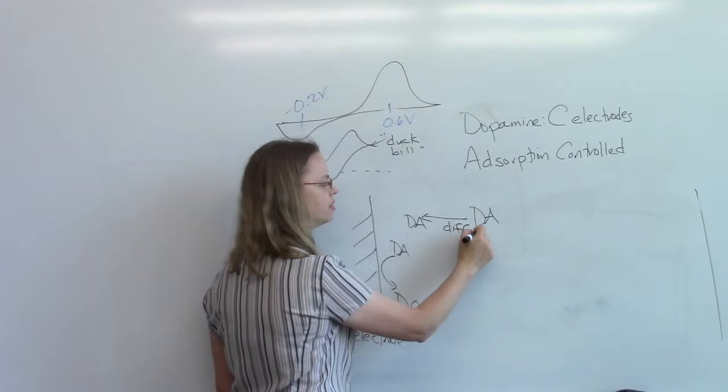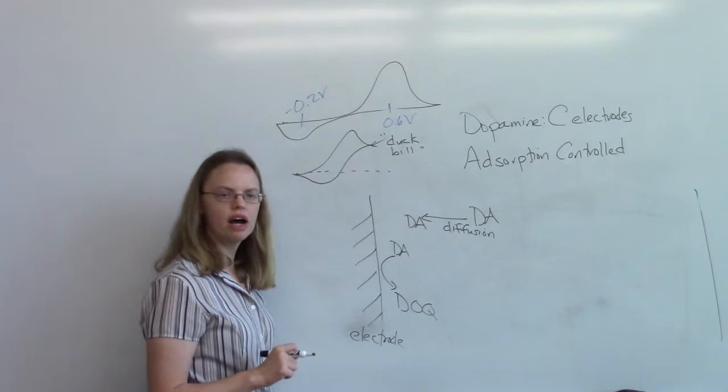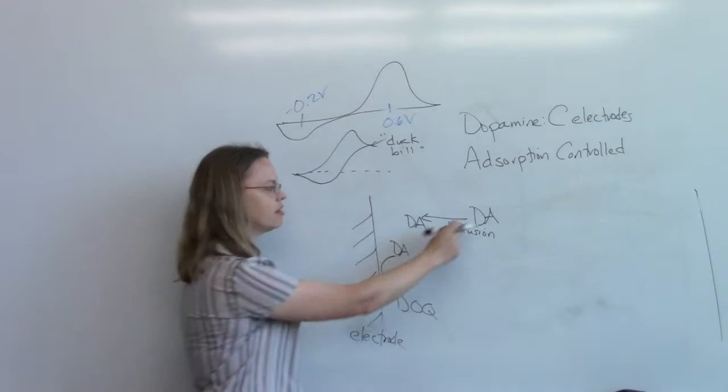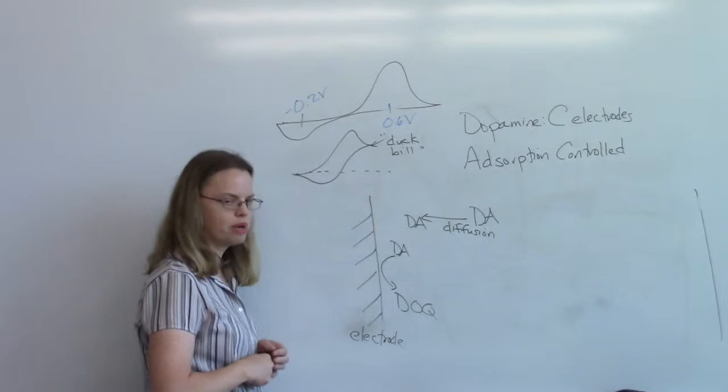It needs to get to the electrode surface to do that, and that we call diffusion. I'm going to pretend we're not stirring here so there's no convection. So we've got to get it to the surface. Even if there is convection, there's still diffusion at the end. So we've got dopamine diffusing in close to the electrode surface.